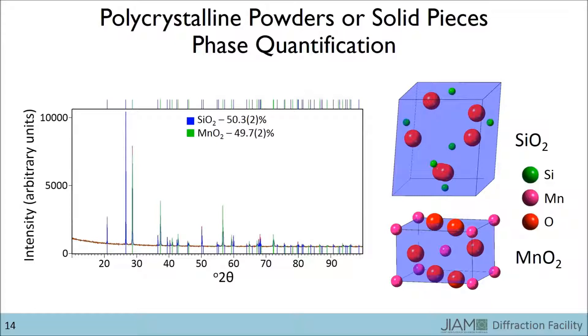When making the sample, I had weighed 50.4% silicon oxide and 49.6% manganese oxide. As you can see, the analysis is very close.